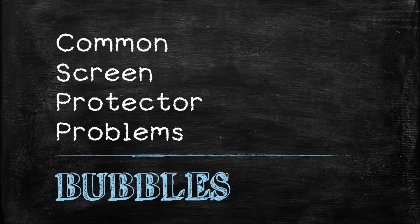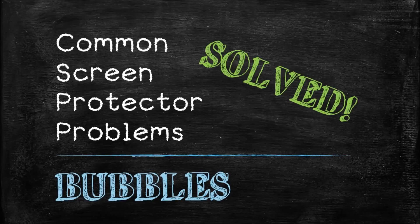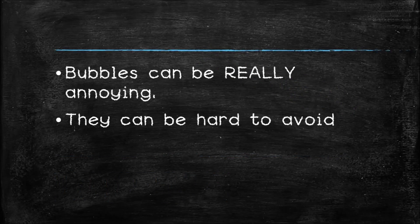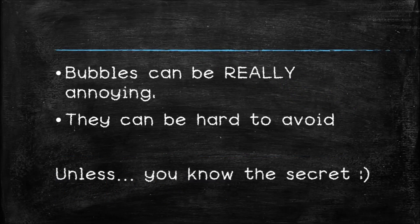Common screen protector problem solved: bubbles. Bubbles between your iPhone's glass and your screen protector really can be annoying. It can also be very difficult to avoid unless you know this little secret I'm about to tell you.